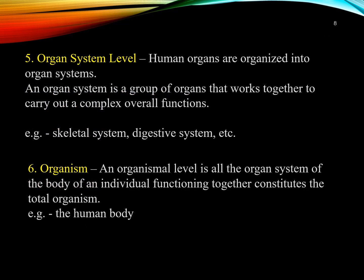The fifth level is the organ system level, where human organs are organized into organ systems. An organ system is a group of organs that works together to carry out complex overall functions. Examples are the skeletal system, digestive system, and respiratory system. The sixth and last level of organization is the organismal level. The organismal level is the highest level of organization — it is the sum total of all structural levels working together, representing the whole human being or organism.